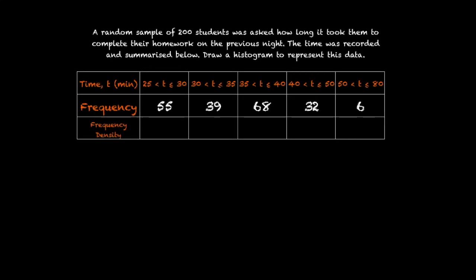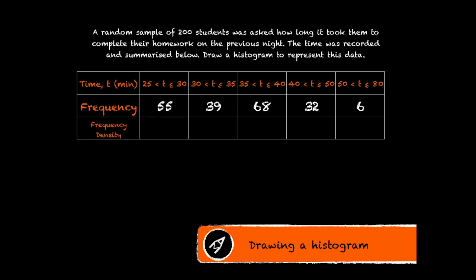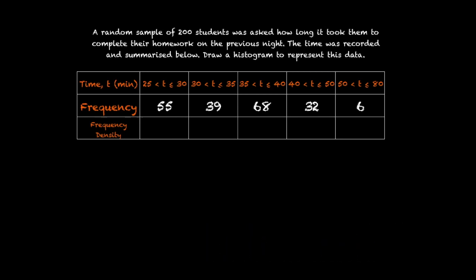So let's have a go at calculating some of the frequency densities in this example. A random sample of 200 students was asked how long it took them to complete their homework on the previous night. The time was recorded and summarized below. Draw a histogram to represent this data. So in order to draw a histogram, we need to know the frequency density because that's what we plot on the y-axis.